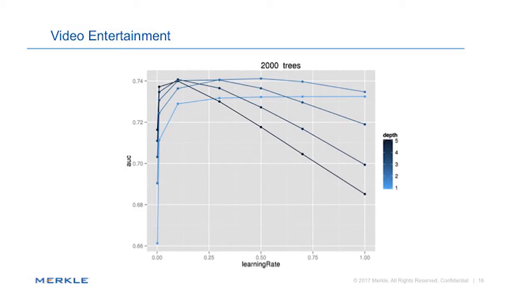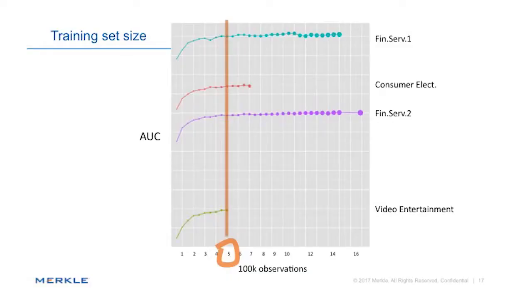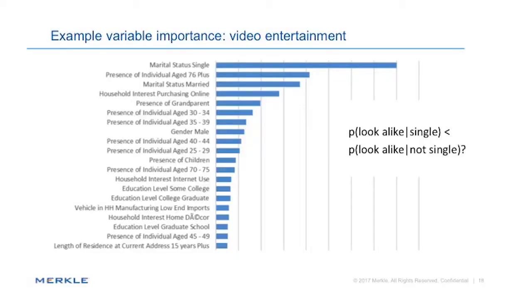Theoretically, a learning rate of one would be a bad idea, so we ran everything from 0.1 to 1.0 to prove that. For trees of depth five, after the first or second model it gets worse — fast. That's the true definition of overfitting. These gradient descent algorithms certainly overfit, which is why you need either early exit detection or dampening with a learning rate. We also looked at how big the data sets need to be — somewhere around 500,000 observations is plenty good.